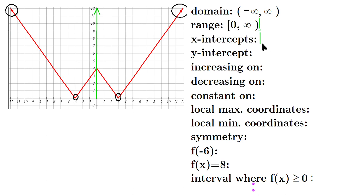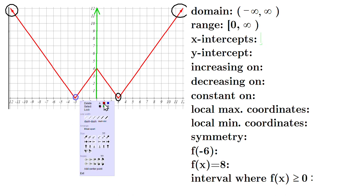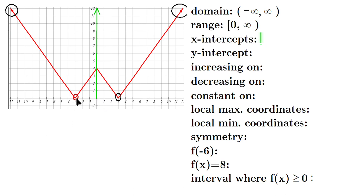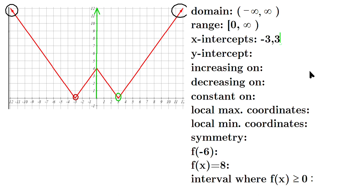What about the X intercepts? Let's list those — I already have those circled. In that red circle, that's negative three, because that's where the Y coordinate is zero. And in the green circle, X is equal to three, and the Y coordinate there is equal to zero. So the X intercepts are negative three and positive three — values of X where the Y coordinates are zero.